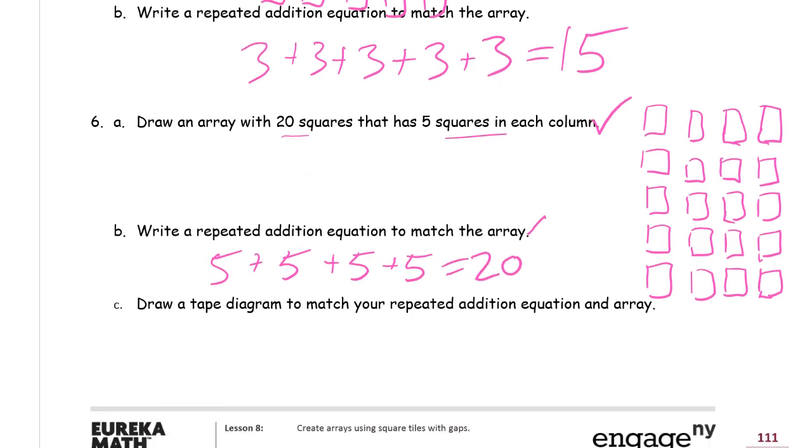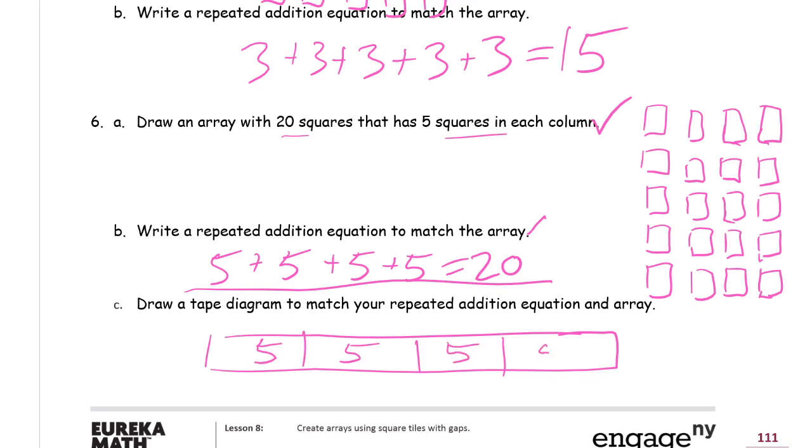And it says draw a tape diagram to match your repeated addition equation and array. So looking at this equation, this is going to make, I just need a tape diagram with 4 5s in it, right? And that's all you really have to have. I like to do this. Just to show that from one end to the other, it's 20. And that's all you really need to do.